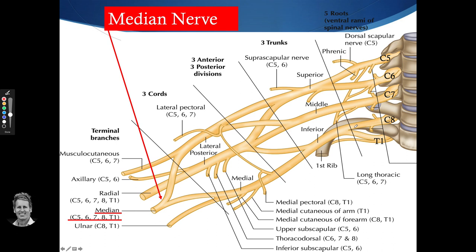As the median nerve travels down, it has one pathway. It passes through the interscalene triangle in the cervical spine — between the anterior and middle fibers of the scalene — then goes over the first rib, under the clavicle, and then underneath the pectoralis minor, continuing down into the arm.